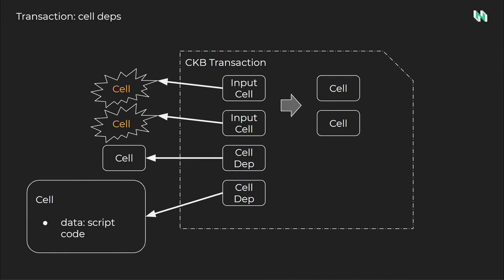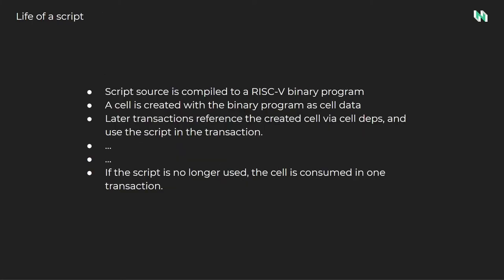Let's look a little deeper at a cell DEP. Each cell contains a data field which can contain any form of data. When script code is saved on-chain, it is saved to the data area of a cell. When we need to use this script code in a transaction, we refer to it using a cell DEP. This allows the script code that resides in the data field of the cell to be repeatedly used since the cell itself is not consumed.